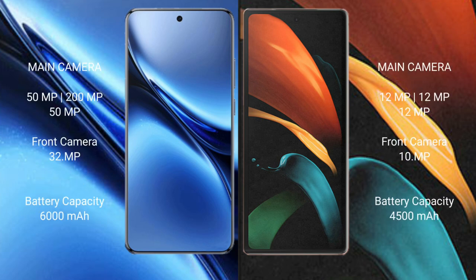Vivo X200 Pro has a rear triple camera setup: 50MP plus 200MP plus 50MP, and a front camera of 32MP. Samsung Galaxy Z Fold 2 has a rear triple camera setup: 12MP plus 12MP plus 12MP, and a front camera of 10MP.